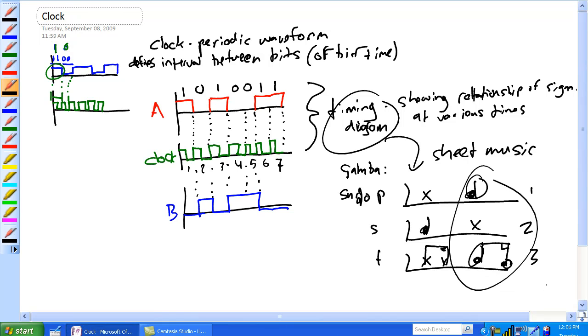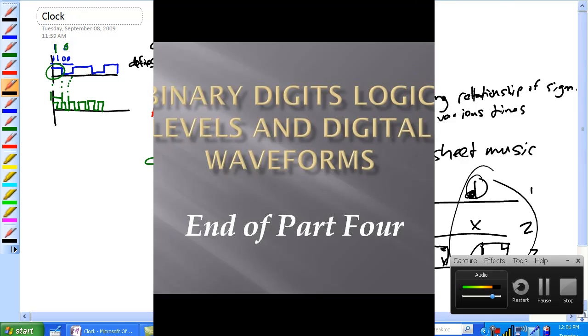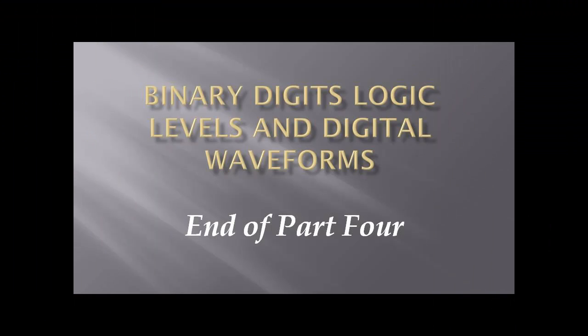Oh, I forgot, quick question here, at bit time 5, what is signal A and signal B? This is the point of a timing diagram, bit time 5, bit time 5, what is A, what is B? So, we'll just find 5, we go up, A looks to be 0, B looks to be 1, so that's how you use timing diagram. Thank you.